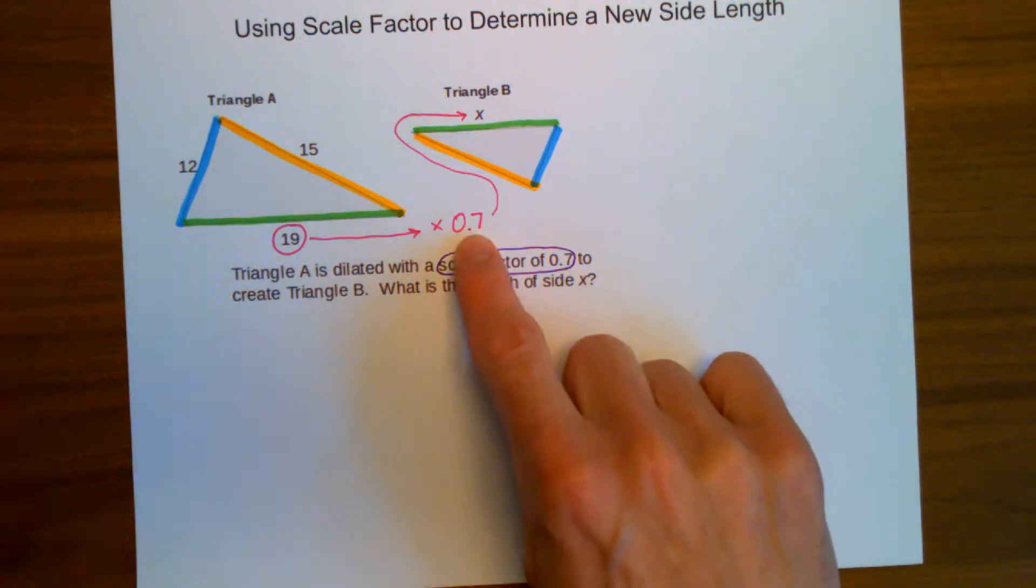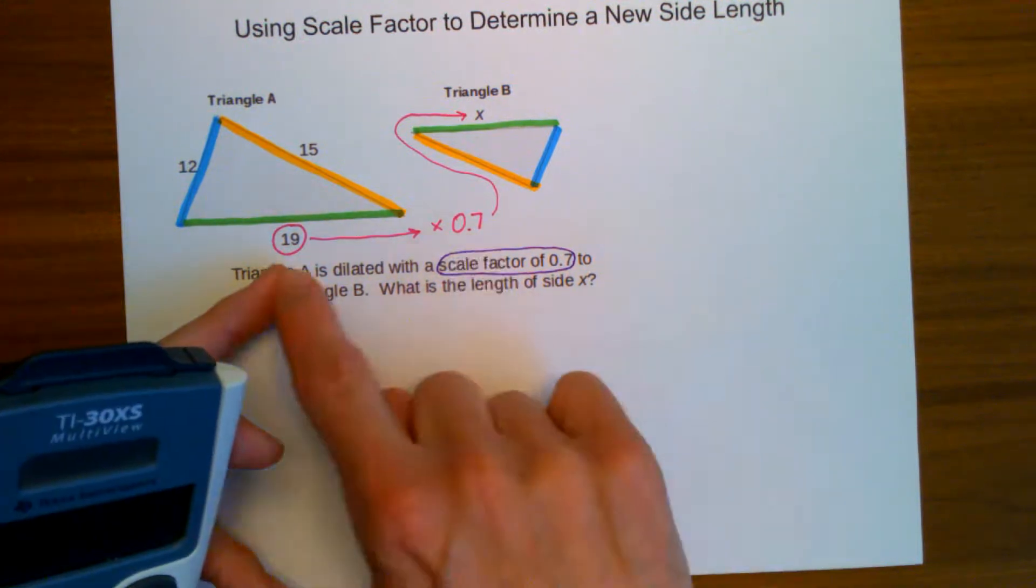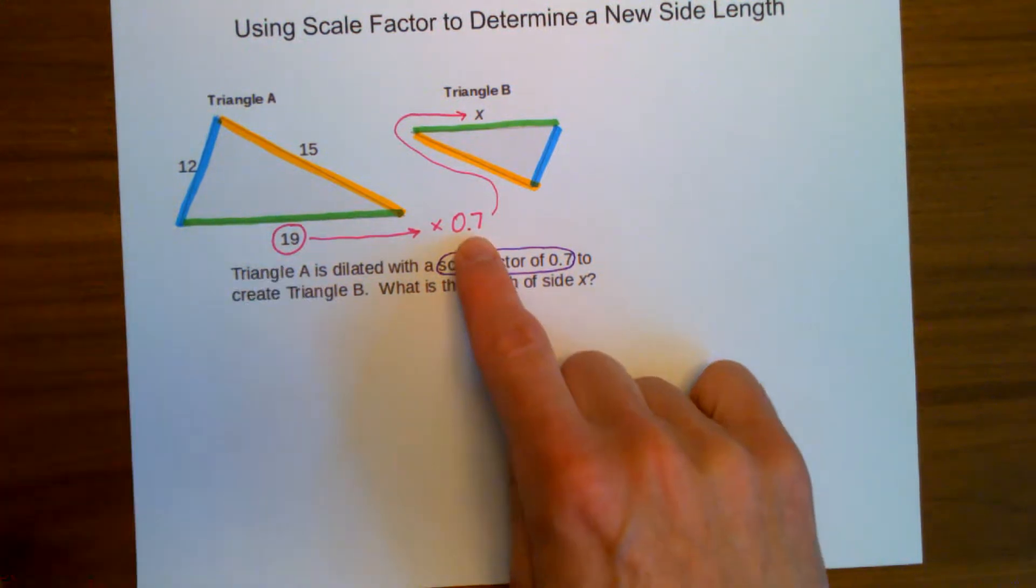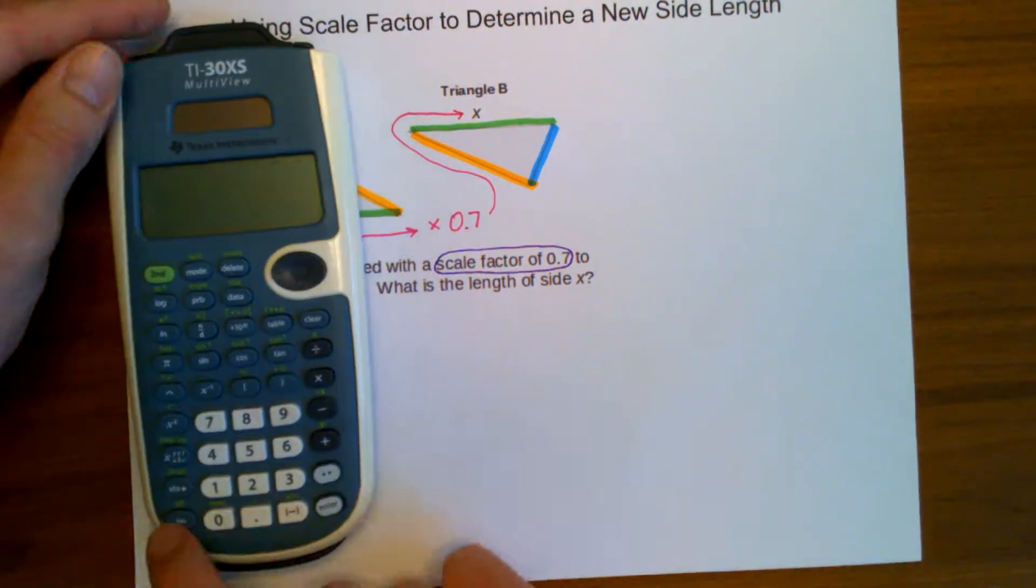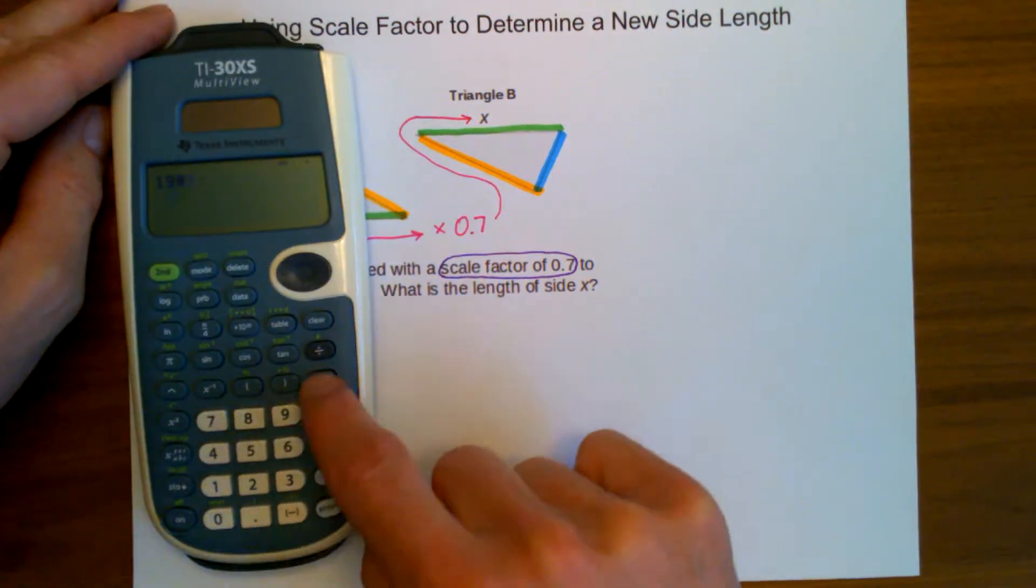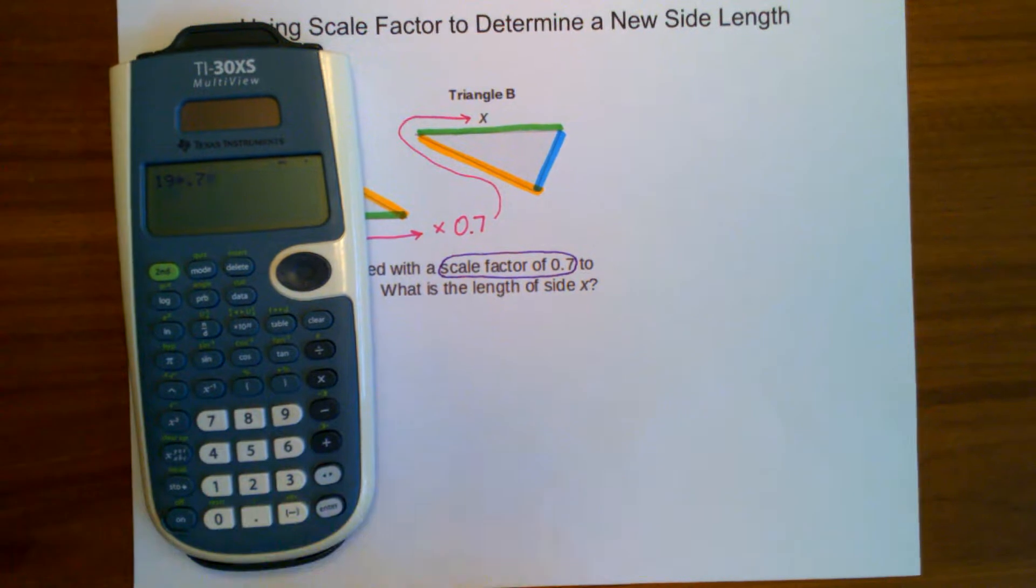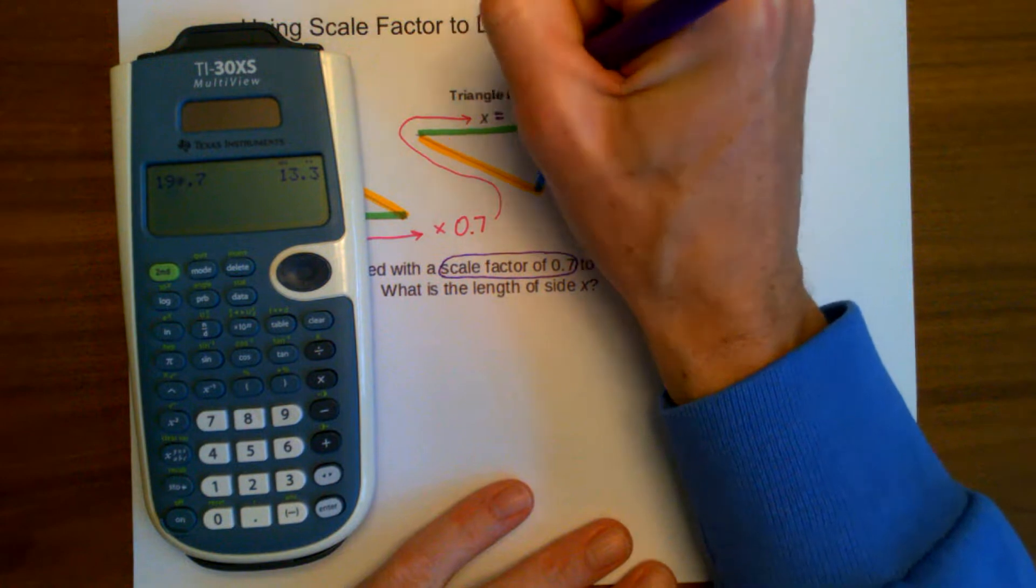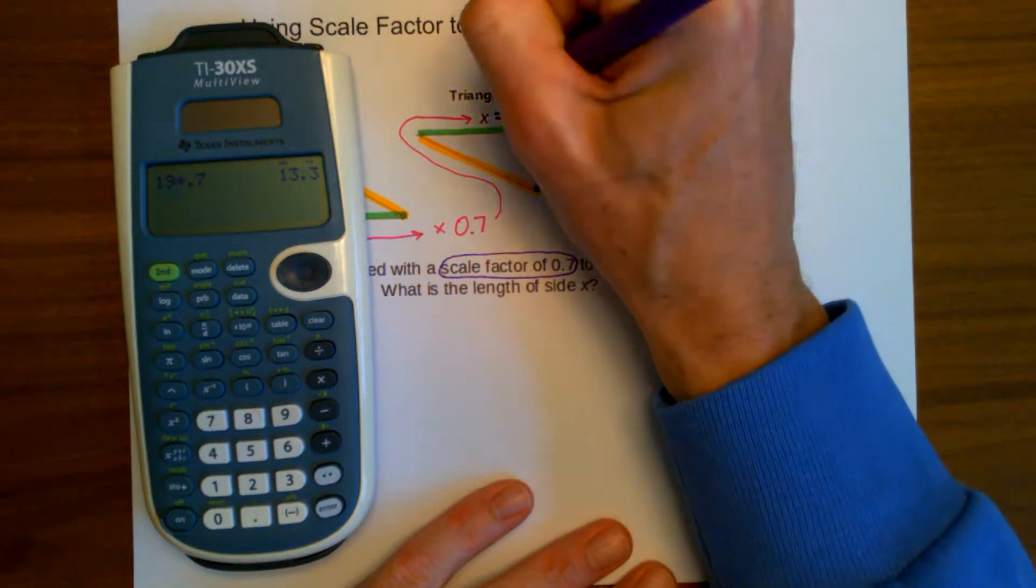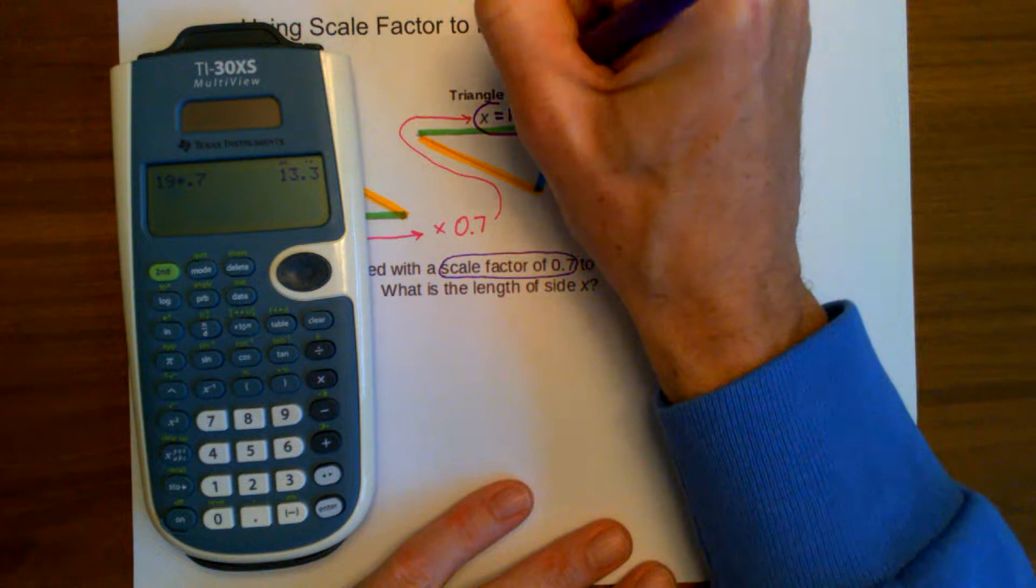So and remember, we made a prediction that this needs to be shrinking. When you multiply by a number less than one, your answer is going to get smaller. So it's going to be less than 19. So if I do 19 times 0.7, 7 tenths, I get 13.3 as my new side length. 13.3 is my answer for the length of X.